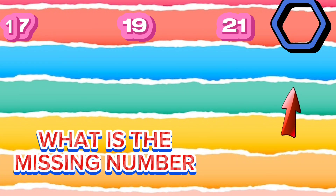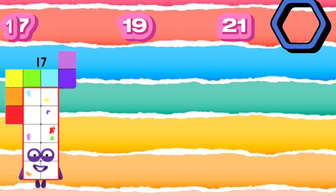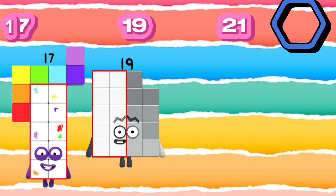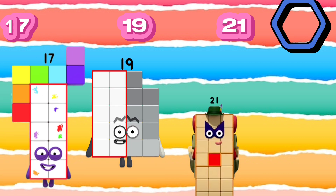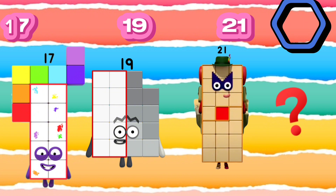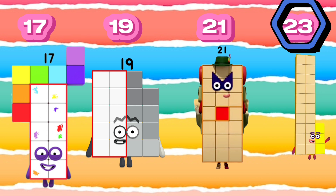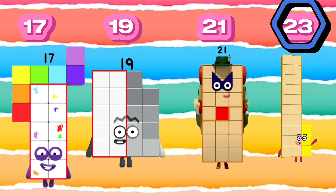What is the missing number? 17, 19, 21. The missing number is 23. The number sequence is 17, 19, 21, 23.